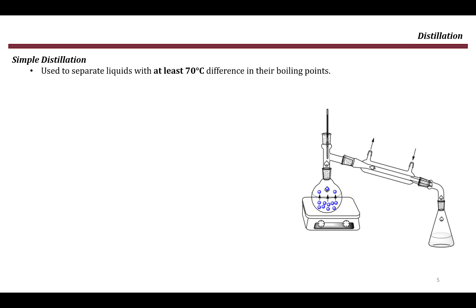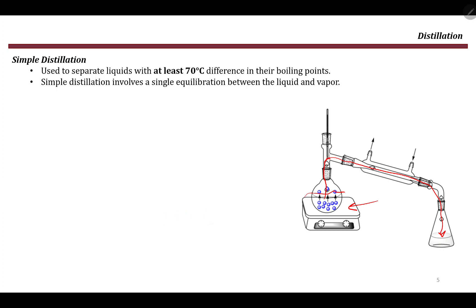Simple distillation is used to separate liquids that have at least a 70-degree difference in their boiling points. So if you have a mixture of two liquids and the difference in their boiling points is around 70 degrees, you can use simple distillation to separate them. The compound with the lower boiling point will evaporate first, go through the condenser, and be collected, while the other compound remains in the flask.